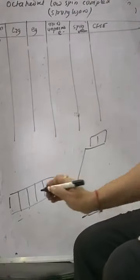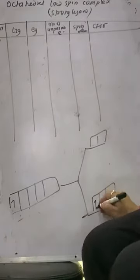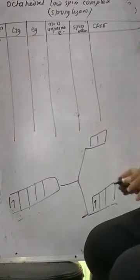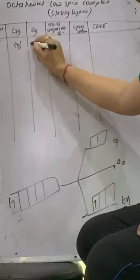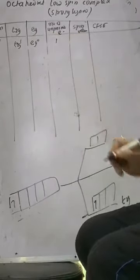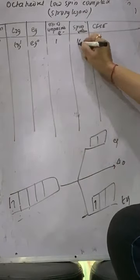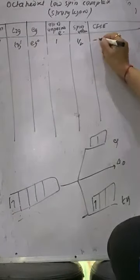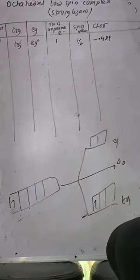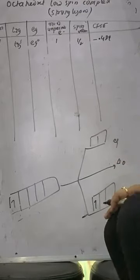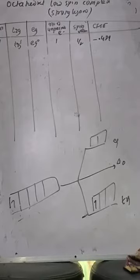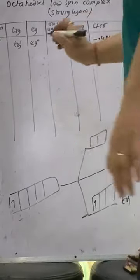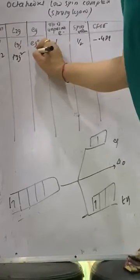Starting with D1: it goes to T2G1, EG0. Unpaired electrons = 1, spin value = 1/2, CFSE = minus 0.4 DQ. For D2: T2G2, EG0, unpaired electrons = 2, spin = 1, CFSE = minus 0.8 DQ.